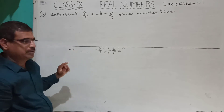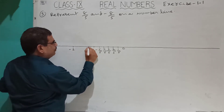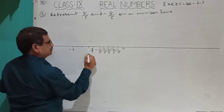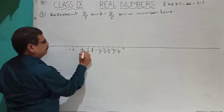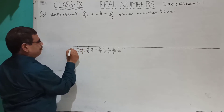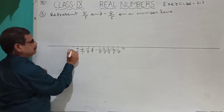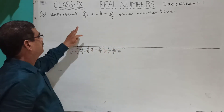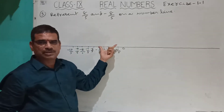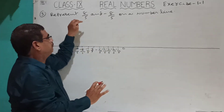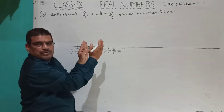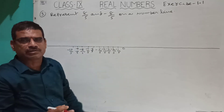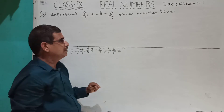5 by 5 means 1. On the negative side similarly we label minus 6 by 5, minus 7 by 5, minus 8 by 5, minus 9 by 5, minus 10 by 5, which equals minus 2. Remember: if the denominator is 7, divide into 7 parts; if 3, divide into 3 parts.